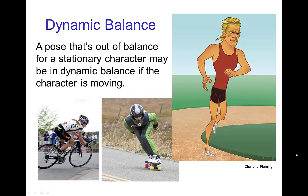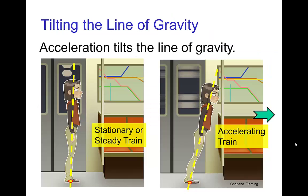Dynamic Balance. A pose that would be out of balance for a stationary character could be in balance when the character is moving. Let's start with a simple example of how this works. If a character is standing on a train moving at constant speed, or the train is just sitting still, then the line of gravity goes straight up and down.